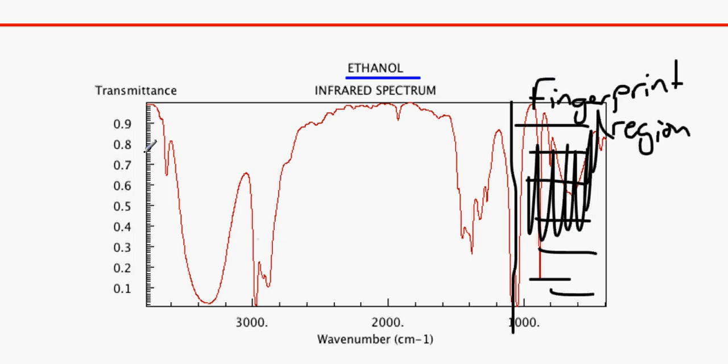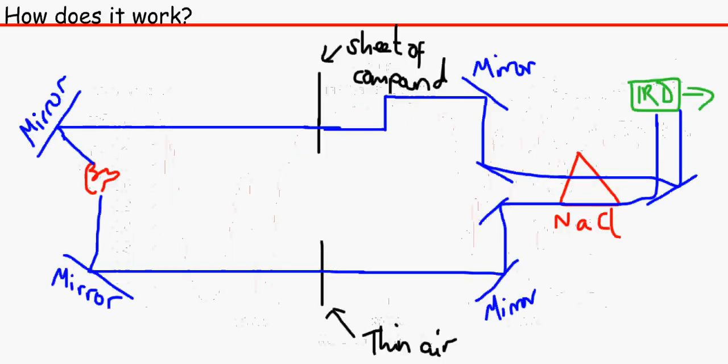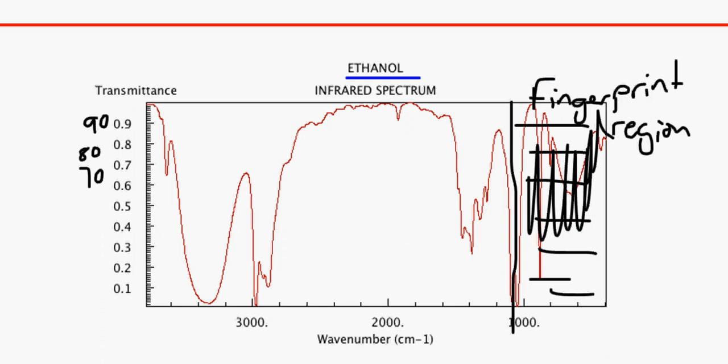Usually the transmittance would be 90%, 80%, 70%, not 0.7. These are just in decimals, it doesn't really matter. The transmittance is the amount of infrared radiation that passes the sheet of the compound after all its absorption. It's like the gold foil experiment.